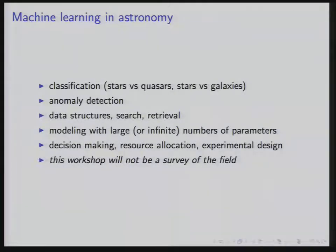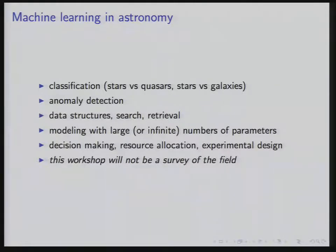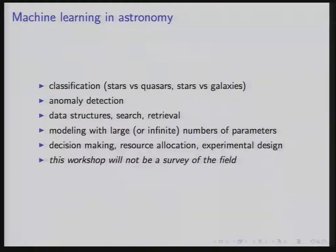There are big model problems where, if you want a model of the sky and a model of all the astronomical imaging, there are parameters for every object on the sky and parameters for every image you've ever taken. When you put it all together, you're talking about billions of parameters if you really wanted to make a model of everything in astronomy. And then there's a lot of decision-making and operations things — scheduling many telescopes working around the globe, resource allocation, and experimental design.